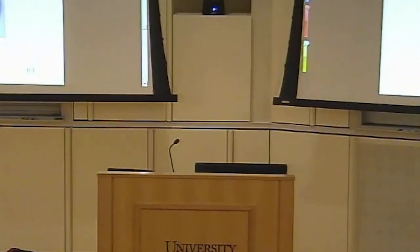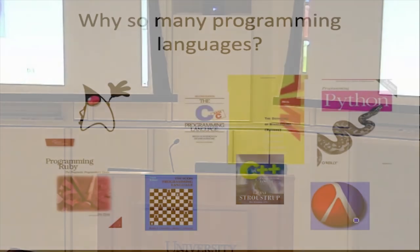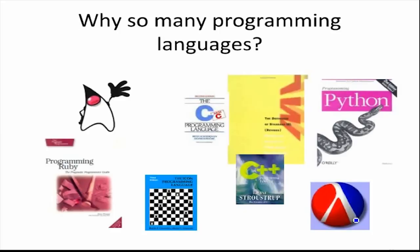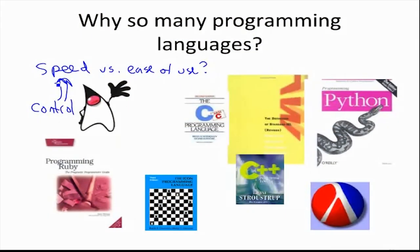It sounds like there are some trade-offs. What are the big trade-offs? Why can't we get everything we want in one language? Speed versus ease of use. Why is that a trade-off? Maybe what we need for speed is lots of control, and in order to have lots of control we have to expose lots of details to programmers. So maybe we have to give up some ease of use to have more speed. So maybe we need two programming languages — one that gives you a lot of control, and one that gives you ease of use.